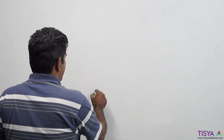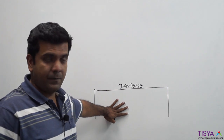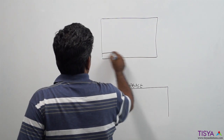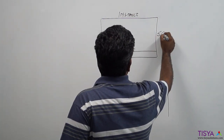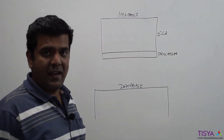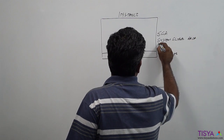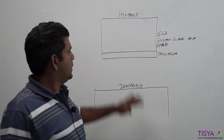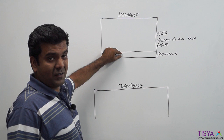In this video I'm going to tell you the primary components that are involved in an Oracle database and instance. The database is a bunch of files present in storage, and the instance is made up of two components: one is called the SGA, and a bunch of processes. SGA stands for System Global Area, sometimes also called Shared Global Area, because this area is shared by all users who connect to the database.